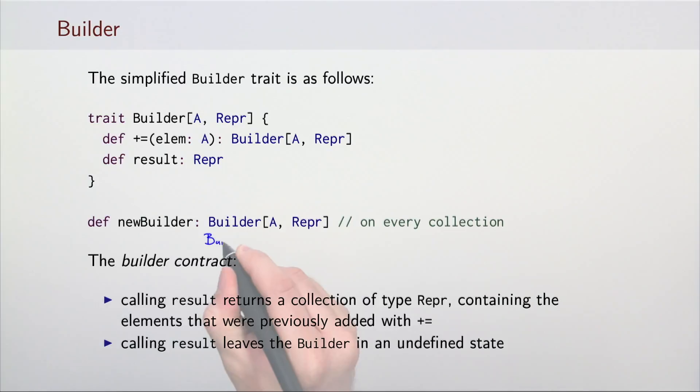For example, a list of integers would return a builder of type builder, of int, and list of int. The builder contract specifies that the result method must return a collection with all the elements that were previously added using the plus equals method. However, calling result leaves the builder in an undefined state. After this, we cannot use it anymore.